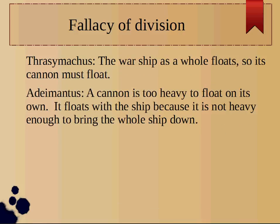For our third example, Thrasymachus realizes that a warship as a whole floats, so its cannon alone must float. Adamantus points out that a cannon is too heavy to float on its own. It floats with the ship because the cannon is not heavy enough to bring the ship down.